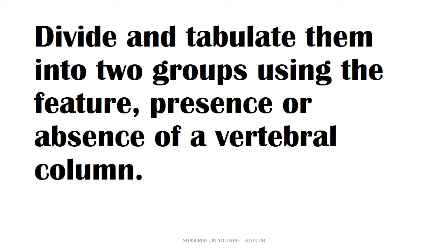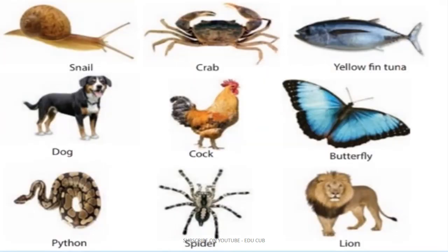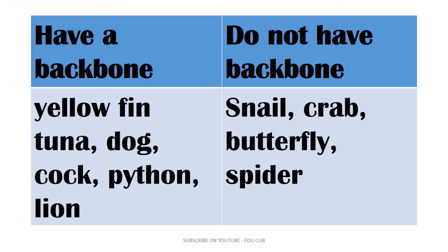I'm going to give you a set of pictures of animals. Divide and tabulate them into two groups using the feature: presence or absence of a vertebral column. The pictures are: snail, crab, yellowfin tuna, dog, cock, butterfly, python, spider, lion. You can tabulate them as 'have a backbone' and 'do not have a backbone.' Animals that have a backbone: yellowfin tuna, dog, hawk, python, and lion. Animals that do not have a backbone: snail, crab, butterfly, spider.